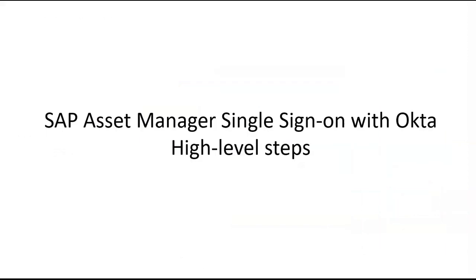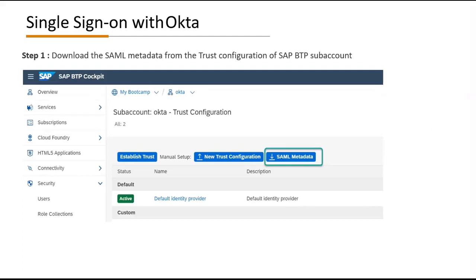Now I'll introduce the steps you'll need to follow to enable single sign-on with Okta, a third-party identity and access management provider. Step one: download the SAML metadata from the trust configuration of the SAP BTP sub-account.